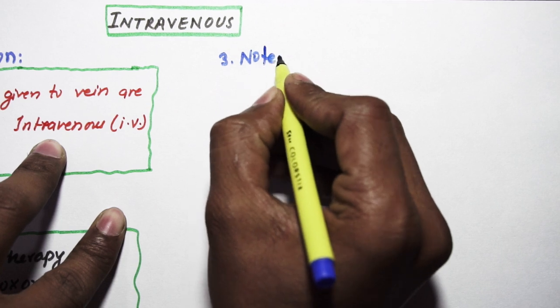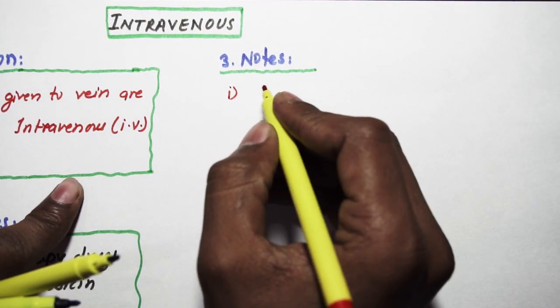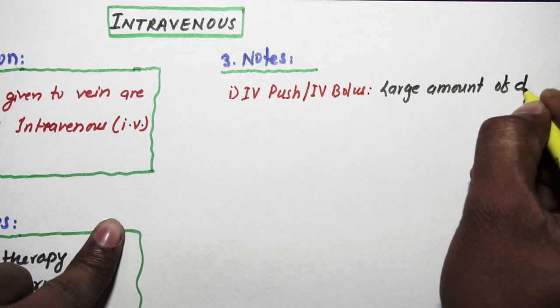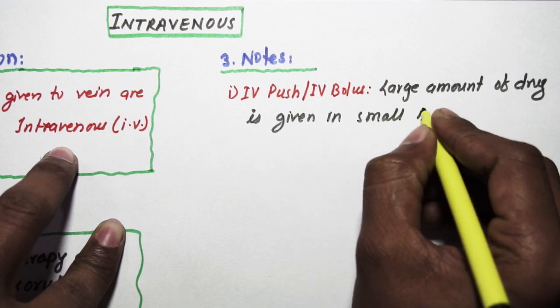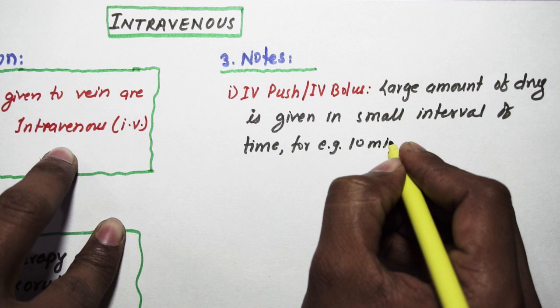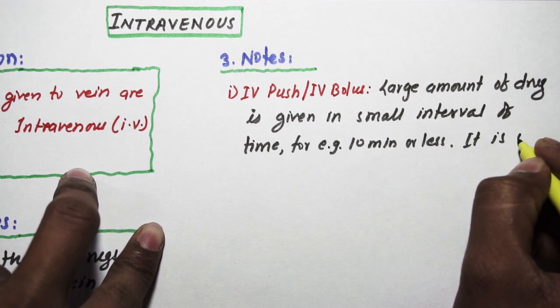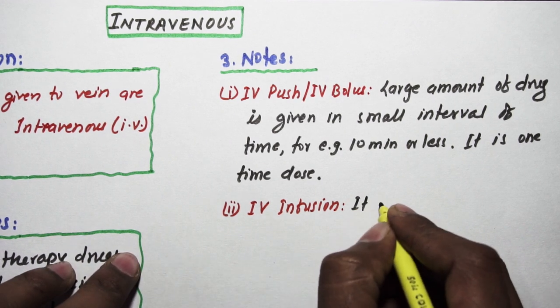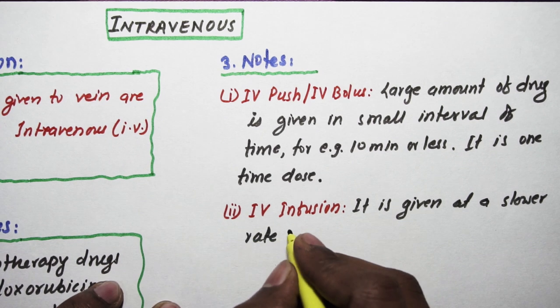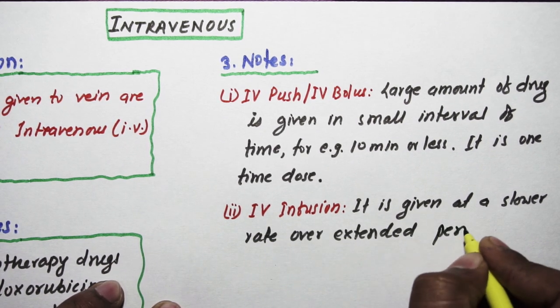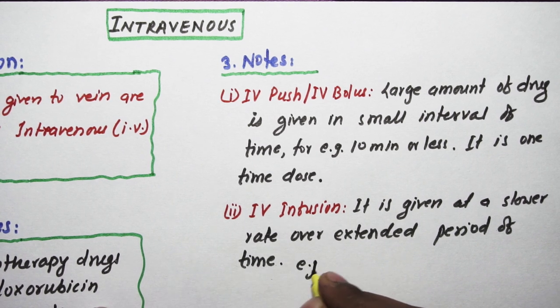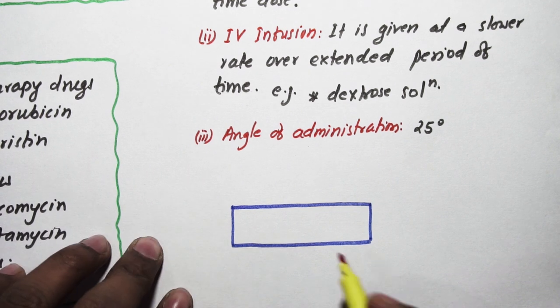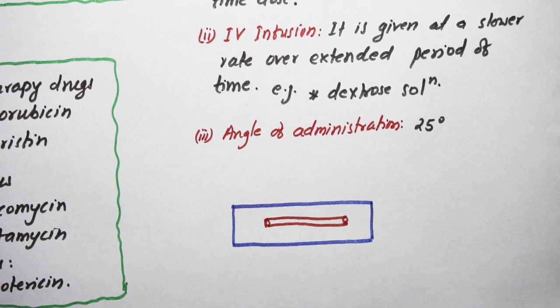There are a few notes. The first one is IV push or IV bolus, which means a large amount of drug is given in a small interval of time, for example less than 10 minutes. It is a one-time dose. The second one is IV infusion, which is given at a slower rate over an extended period of time, so it is a large volume dose. An example is dextrose solution. The third point is the angle of administration, which is 25 degrees.